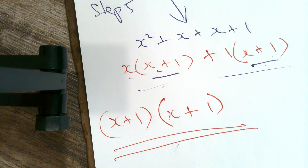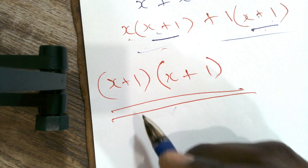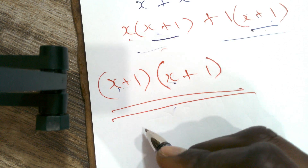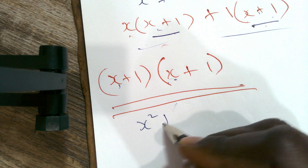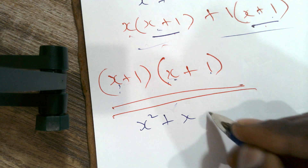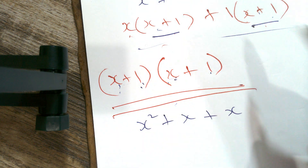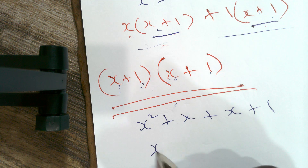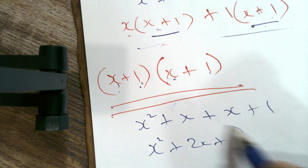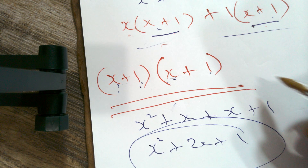To verify this is correct, we expand the expression: x times x gives x², plus x times 1 gives x, plus 1 times x gives x, and 1 times 1 gives 1. Simplifying: x² plus x plus x plus 1 gives x² plus 2x plus 1, which is back to the original expression. So our answer is correct.